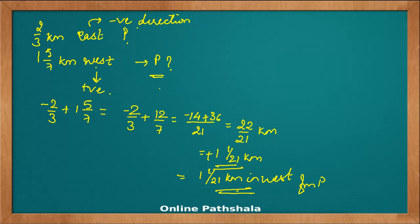This explains how to solve different problems in the addition section on rational numbers. The rule is simple: first, assume a positive and negative situation. It can be above sea level and below sea level, east and west direction, north and south direction.